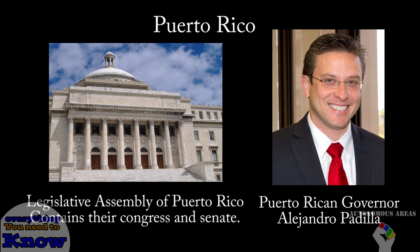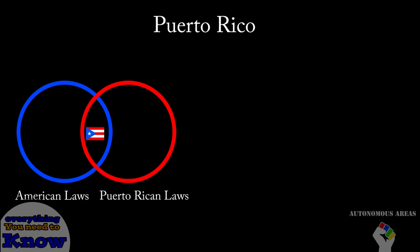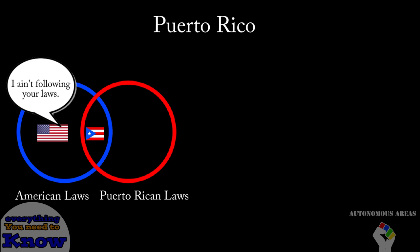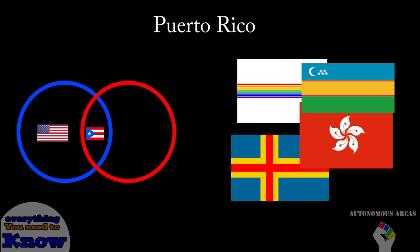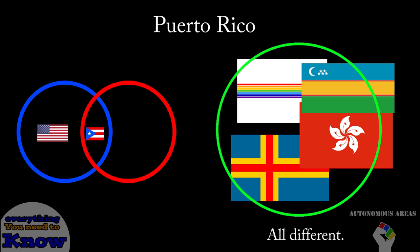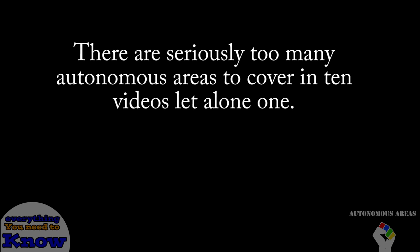The people of Puerto Rico elect all of these individuals. Being a territory though, they must follow all American laws. So a law can exist in Puerto Rico and not in the United States, but a law cannot exist in the United States without also existing in Puerto Rico. I think this illustrates the general relationship between an autonomous area and their mother country. Of course this is one case and the relationship differs in every scenario — this video acts more as an overview of autonomous areas.